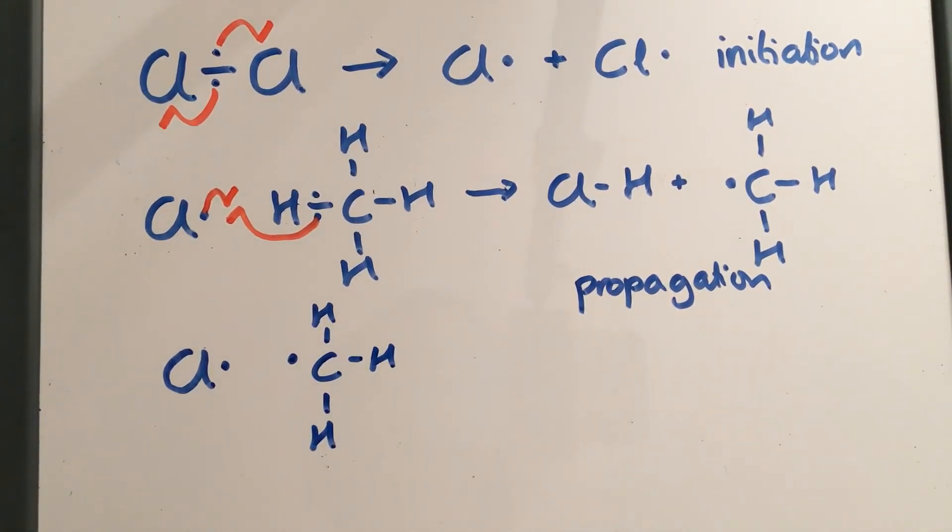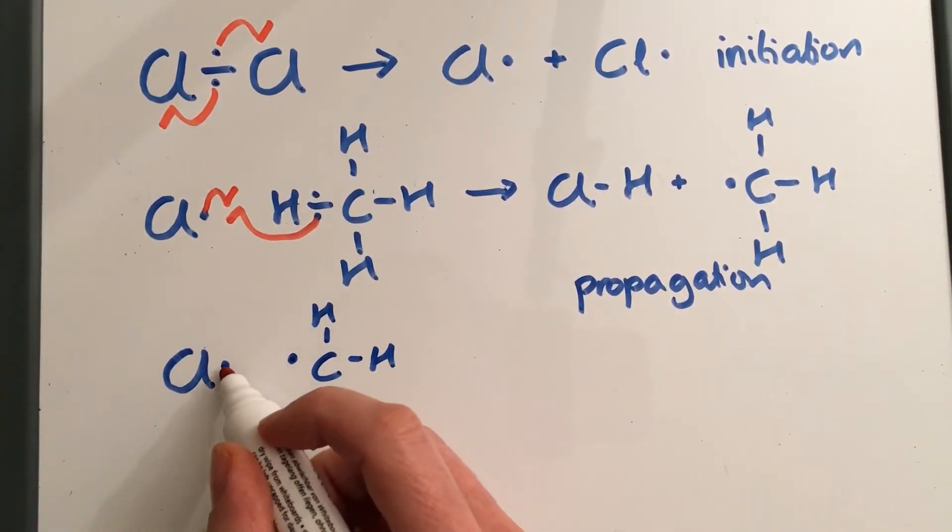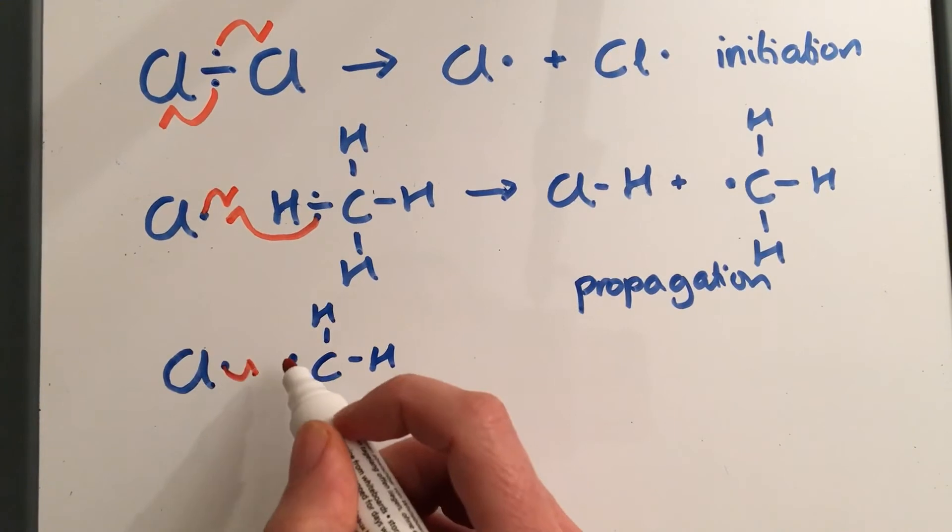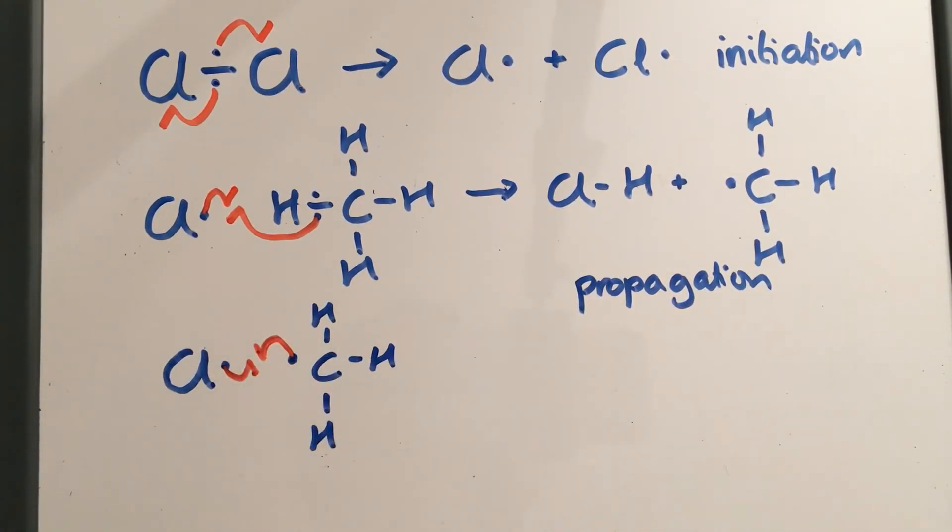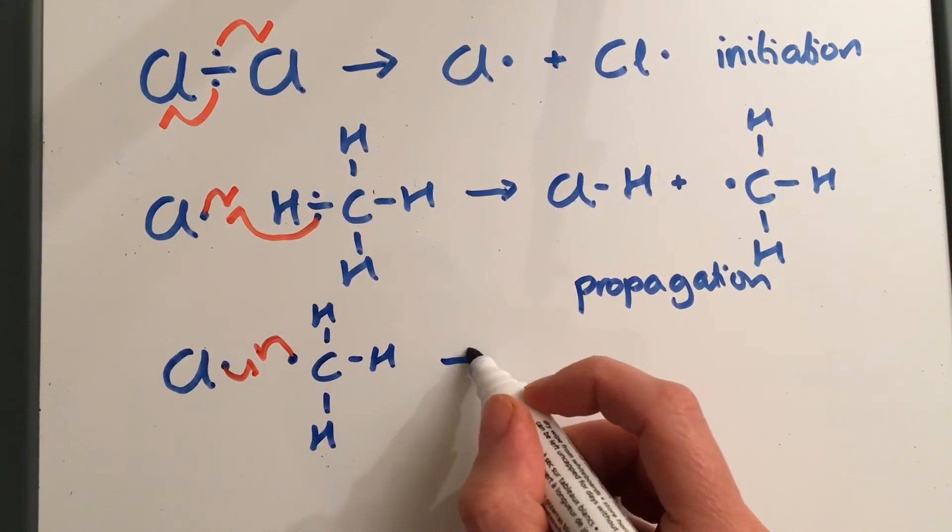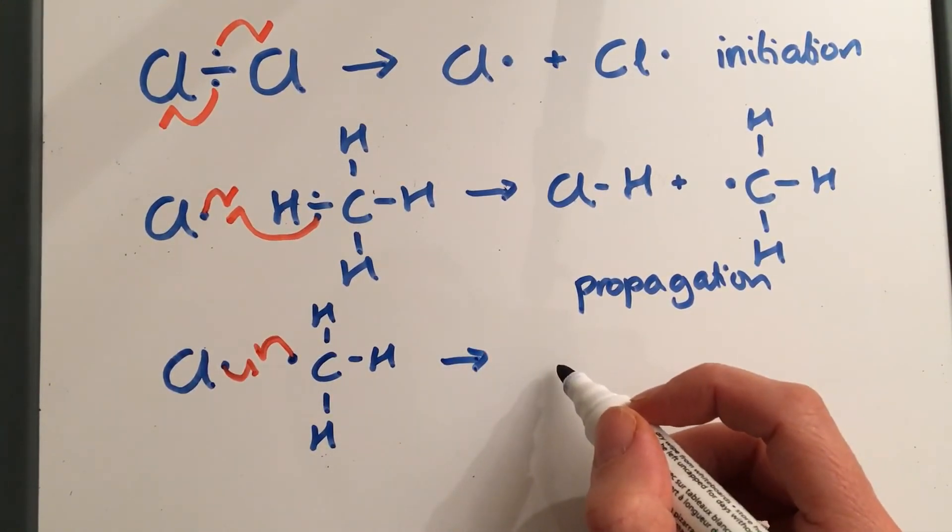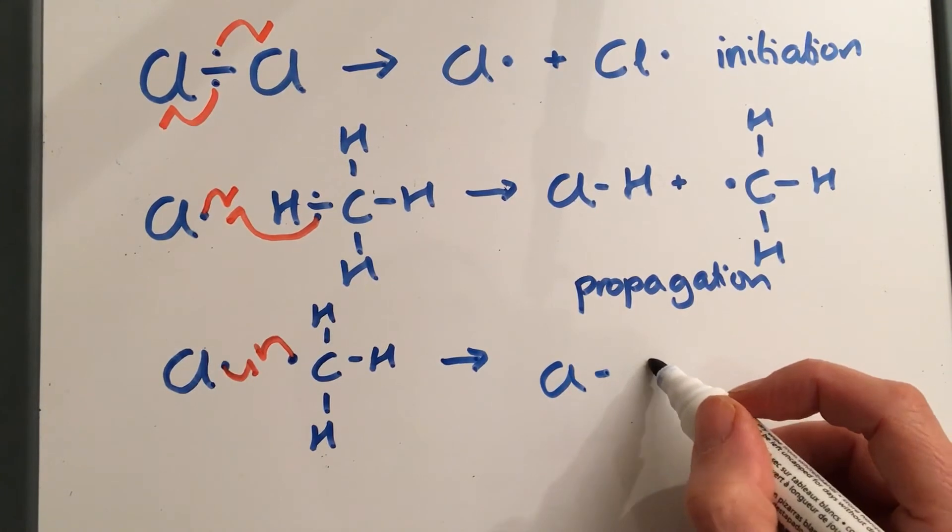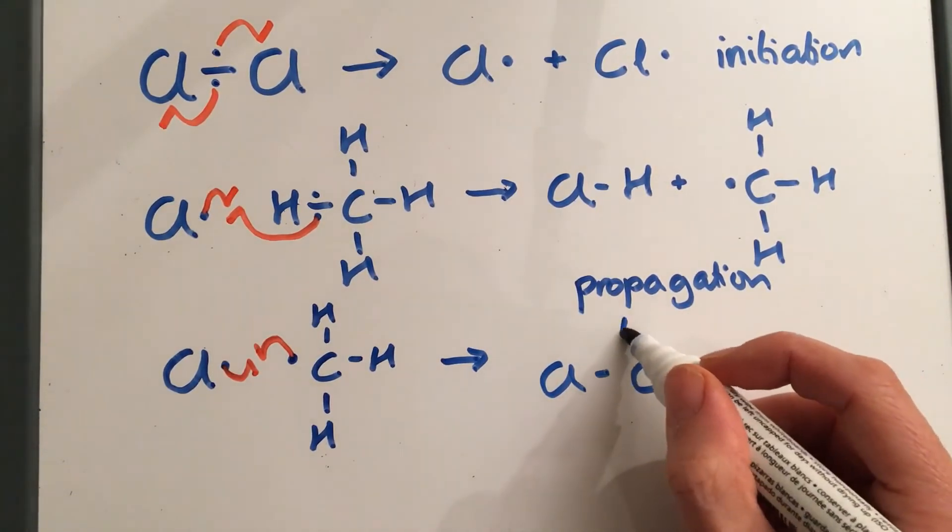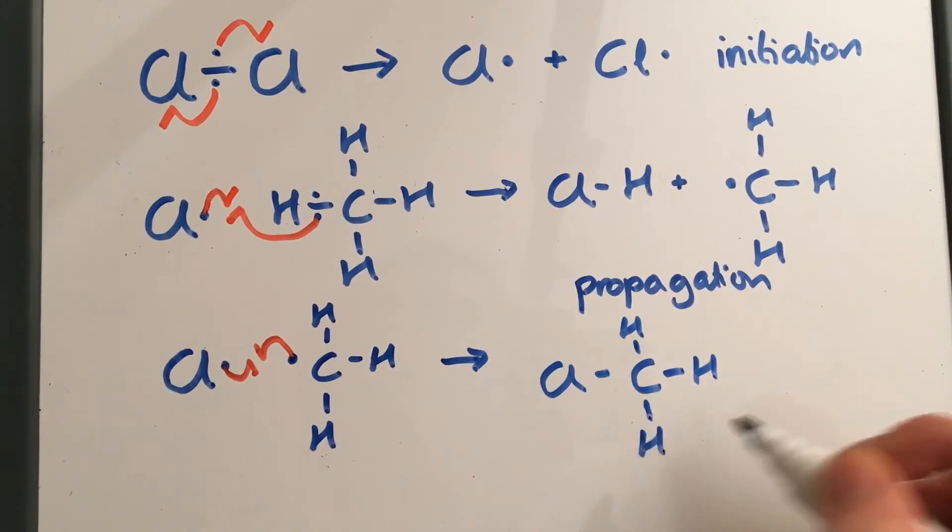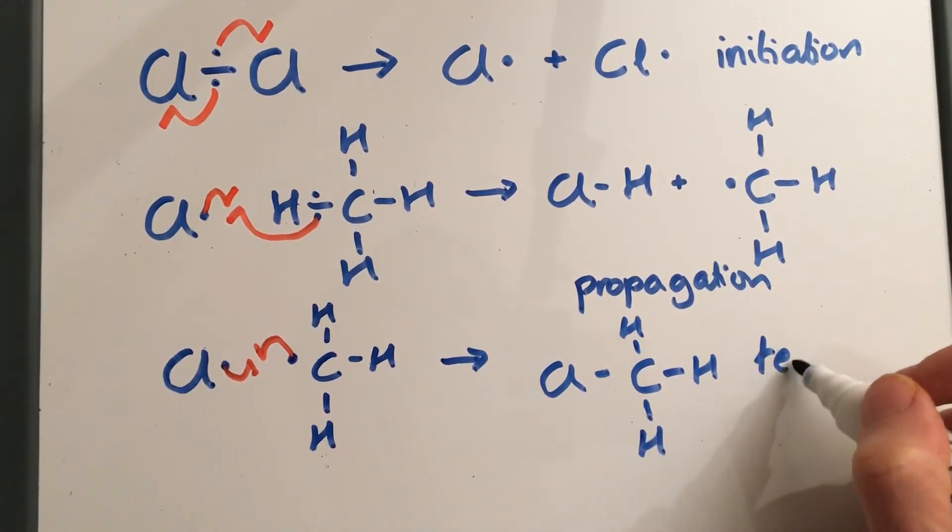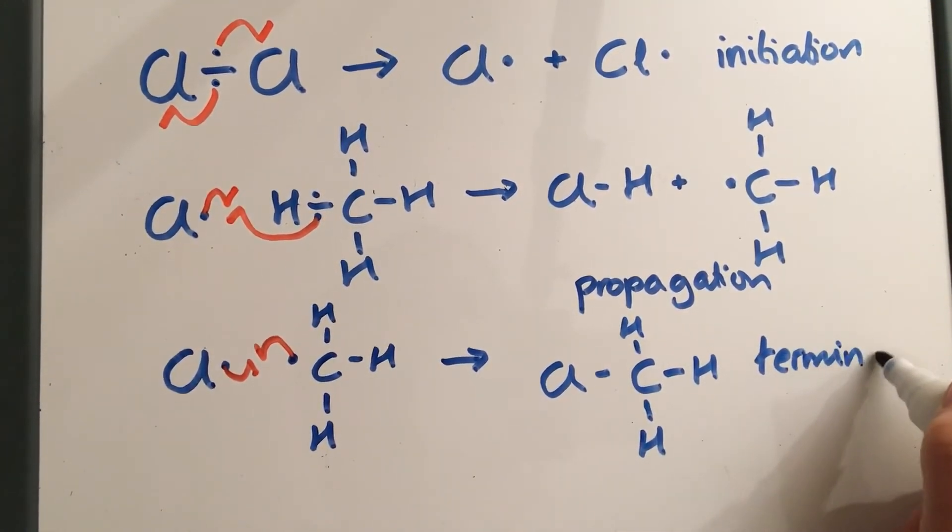To form chloromethane - and that's the unpaired electron from the chlorine radical and the unpaired electron from the methyl radical both going together to form a covalent bond and giving us chloromethane. So that is a termination step.